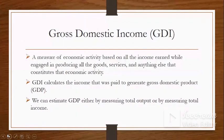Gross domestic income (GDI) is a measure of economic activity based on all the income earned while engaging in producing all the goods and services that constitute economic activity. GDI calculates the income that was paid to generate gross domestic product.